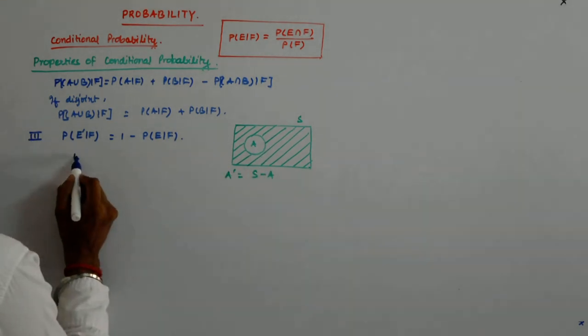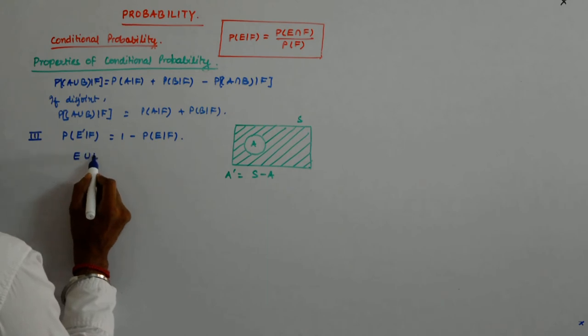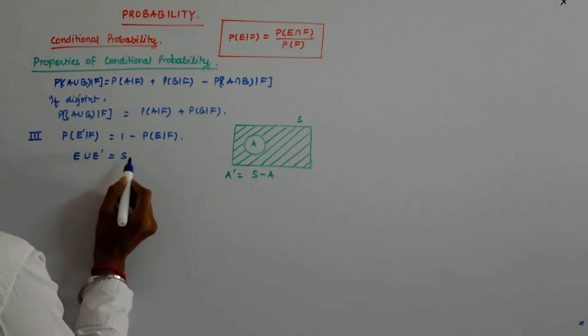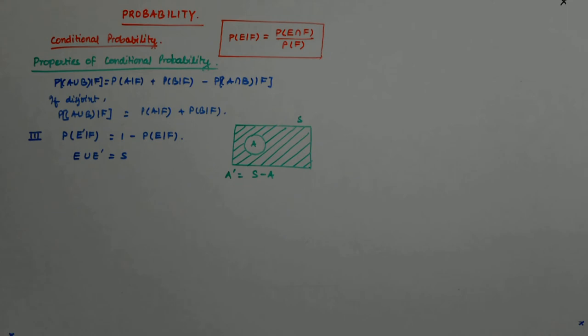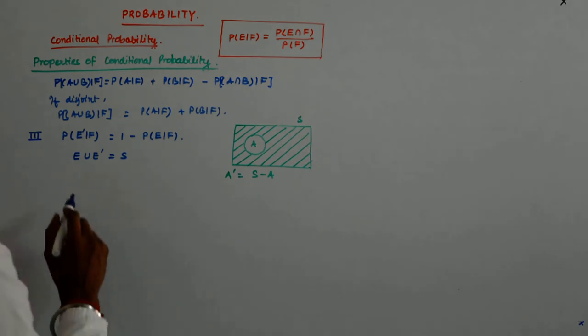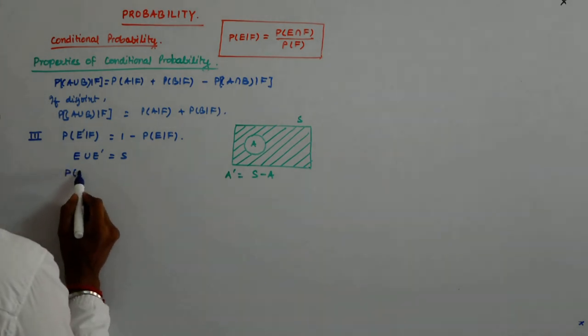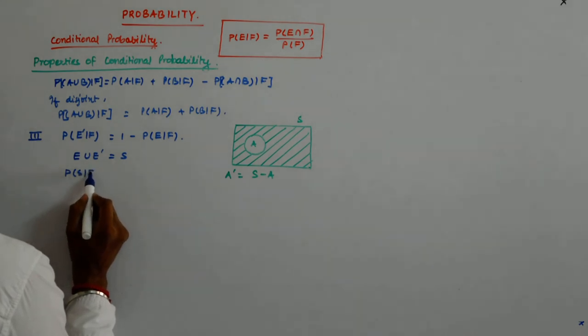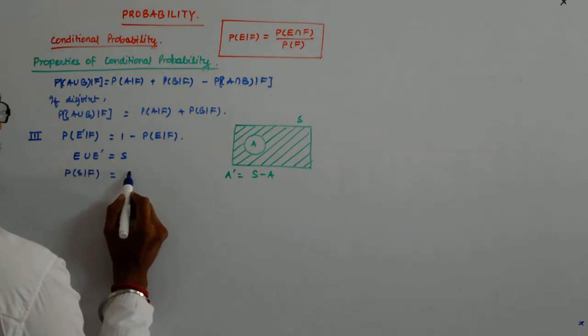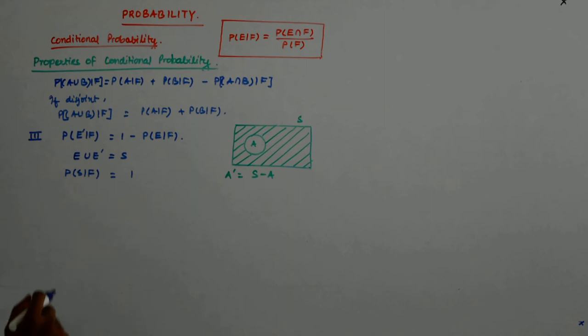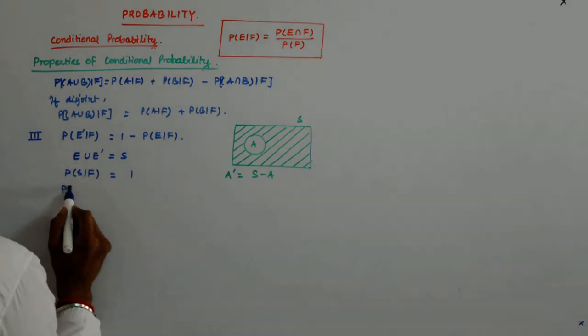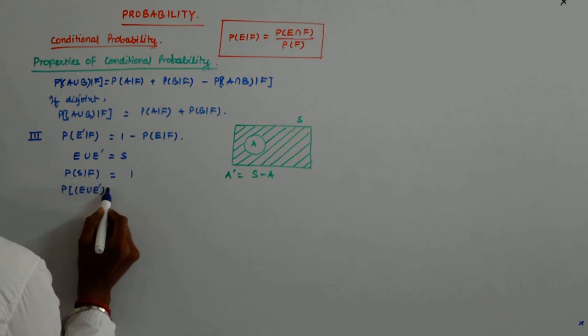You will see that E∪E complement is S. And we know that P(S|F) is equal to 1. So, P(E∪E complement|F) is equal to 1.